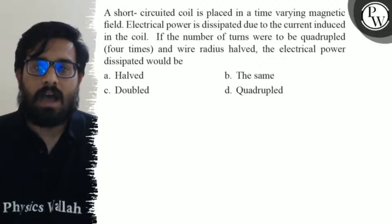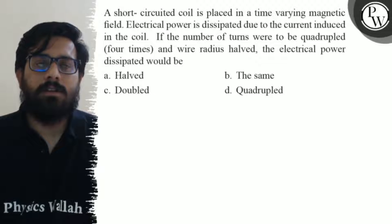First option is halved, second option remains the same, third option doubled, and your fourth option is quadrupled.